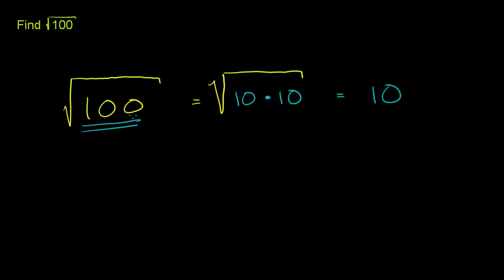So the square root of 100 is 10. Or another way you could write, I guess, the same truth is that 10 squared, which is equal to 10 times 10, is equal to 100.